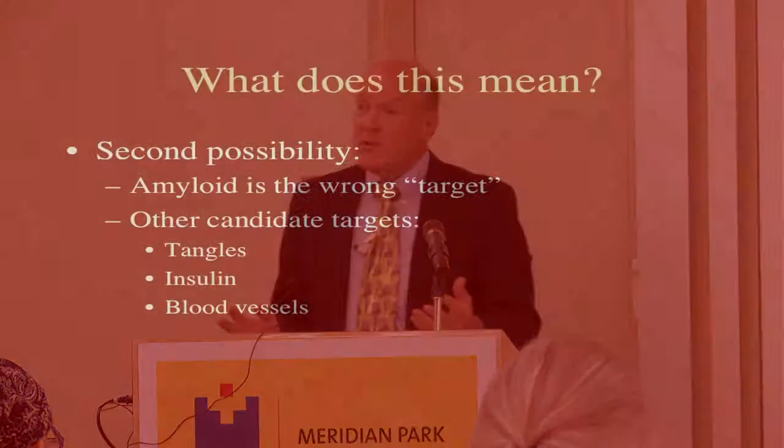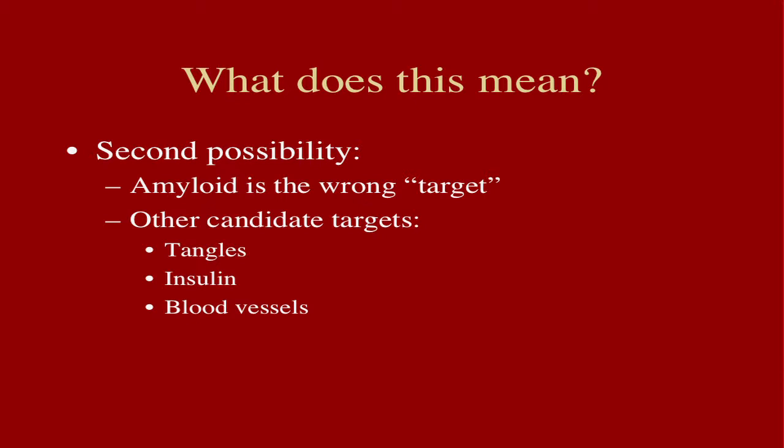That opinion is being tested as we speak — there are trials all over the country and the world testing that possibility, including some trials we're participating in at OHSU. The other opinion is that we're barking up the wrong tree going after amyloid — that maybe amyloid is not the right therapeutic target. It certainly is not the only thing going on in the brain, and this possibility is also very plausible and also being tested.